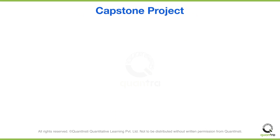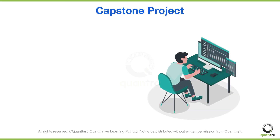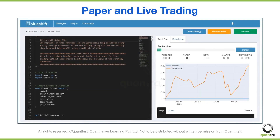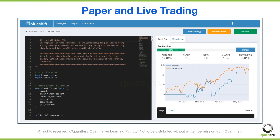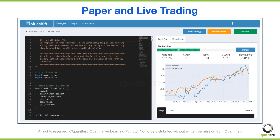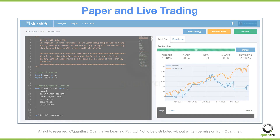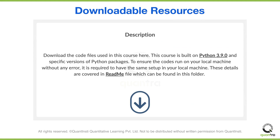If you prefer a hands-on approach and wish to practice the skills acquired from this course, we also have an interesting capstone project for you. To enable you to implement the volatility trading concepts, we will also provide a live trading template. You can use this template to paper trade with real-time market data, and if you are satisfied with the results, you can move further and live trade as well. All the strategy codes and data files will be provided in the last section of the course, and you can also tweak and modify the code to truly make it your own trading strategy.